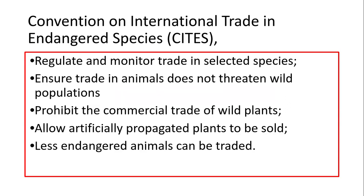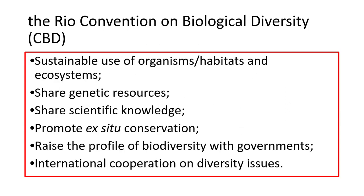A lot of animals are put into the pet trade, which endangers their wild populations, so CITES would get involved and try to stop that from happening. The next one is the Rio Convention on Biological Diversity, which is all about sharing information with scientists across the world to enable sustainable use of organisms and habitats, and also raise the profile of biodiversity within governments. They share genetic resources, share scientific knowledge, promote ex-situ conservation, and promote international cooperation on diversity issues — getting governments across the world to work together to help prevent animals, ecosystems or habitats becoming extinct or damaged.